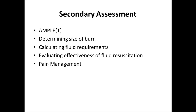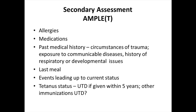After your primary assessment, you are typically at a treating facility and begin the secondary assessment. During this time, you will be collecting information using the acronym AMPLIT. You'll be determining the size of the burn, calculating fluid requirements, evaluating the effectiveness of the fluid resuscitation, and managing the child's pain. Using AMPLIT, you will collect information about any allergies, medications, past medical history including the circumstances of the trauma, exposure to any communicable diseases, and a history of respiratory or developmental issues. You'll ask about his last meal, the events leading up to his current status, and also the status of his tetanus and other immunizations.